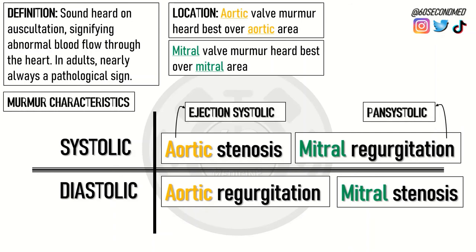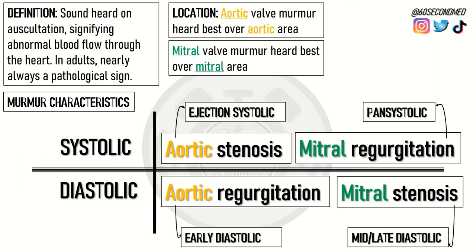We can also think about the murmur characteristics, which again help to differentiate what exactly is the pathology behind the murmur. An ejection systolic murmur is associated with aortic stenosis. A pansystolic murmur is associated with mitral regurgitation. An early diastolic murmur is associated with aortic regurgitation, and a mid to late diastolic murmur is associated with mitral stenosis.